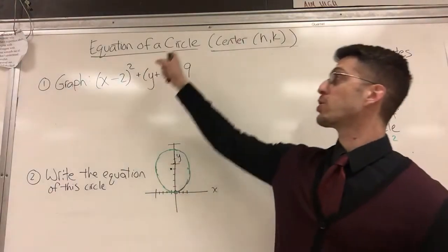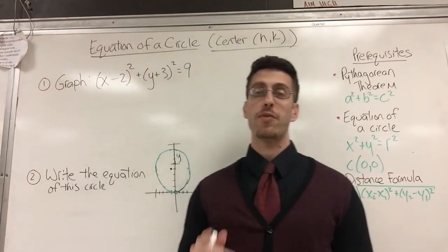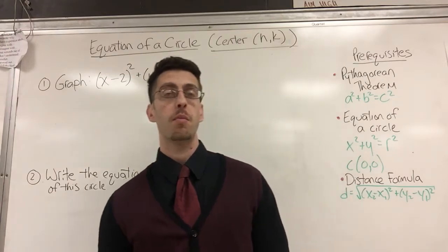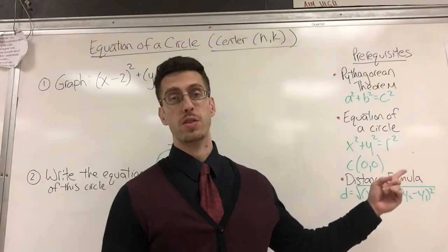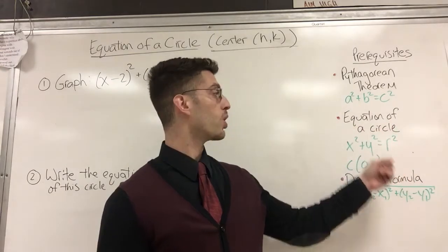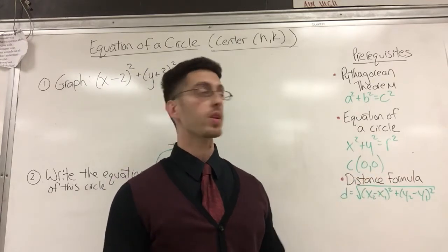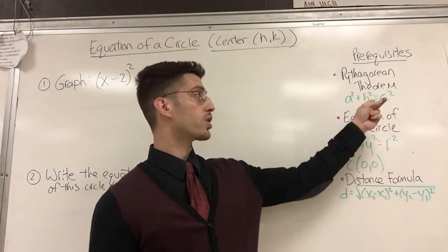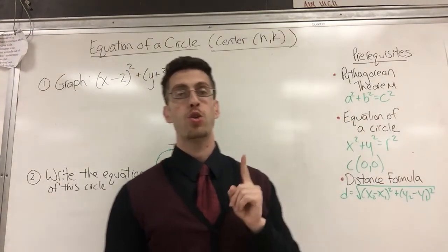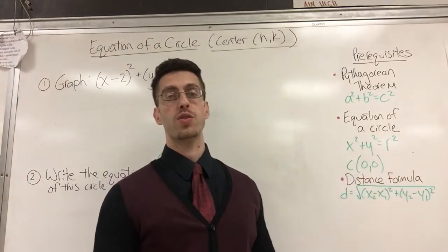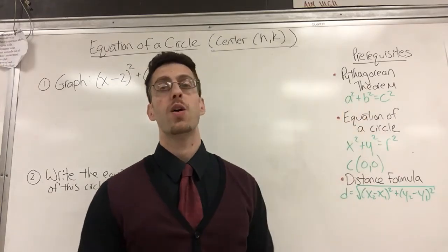So today we're going to do equations of circles where the center is not zero zero. A few videos you should have already looked at before this one: you gotta be good with the Pythagorean theorem — a squared plus b squared equals c squared — because I use that to teach you the equation of a circle where the center is zero zero. That equation was x squared plus y squared equals r squared, which is basically the same as the Pythagorean theorem. I also used the Pythagorean theorem to create a distance formula, which is used to find the distance between any two points.